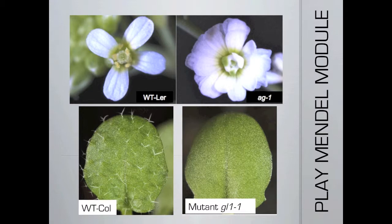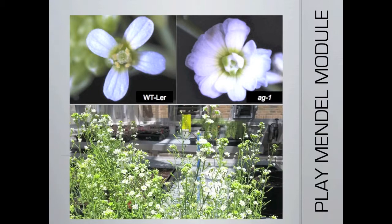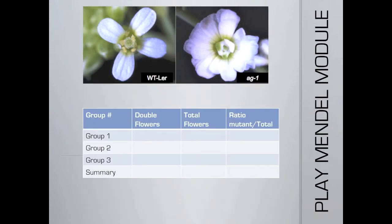Notice also how the GL1 mutant does not contain the leaf hairs normally present in the wild type Columbia and wild type Landsberg leaves. Observe the frequency with which each of these phenotypes occurs. Notice, for example, how many plants in the AG1 pod exhibit the double flower phenotype and determine the ratio of mutant phenotype to total number of plants.